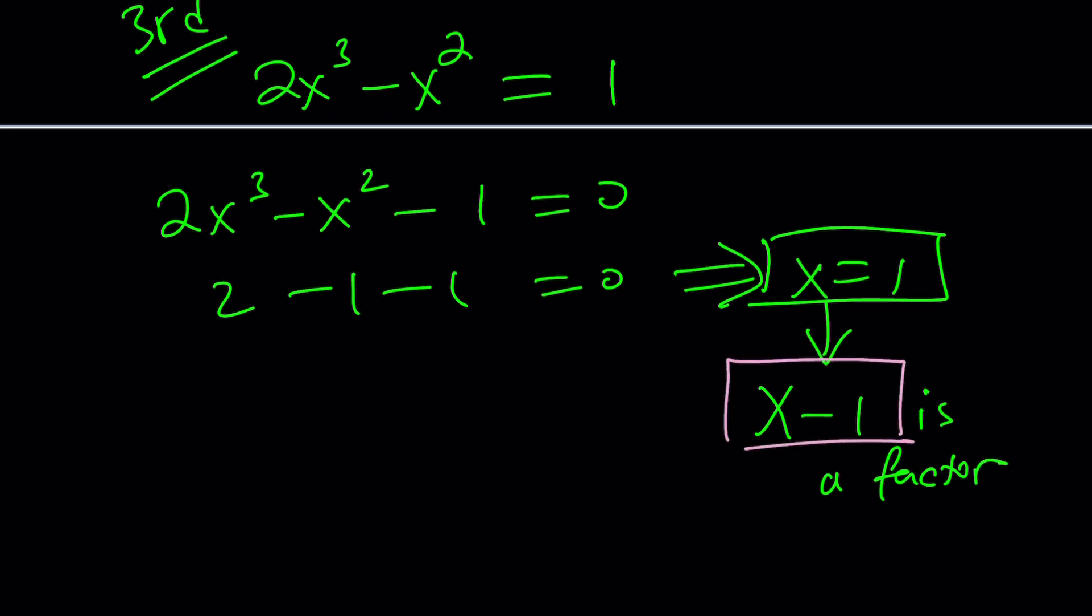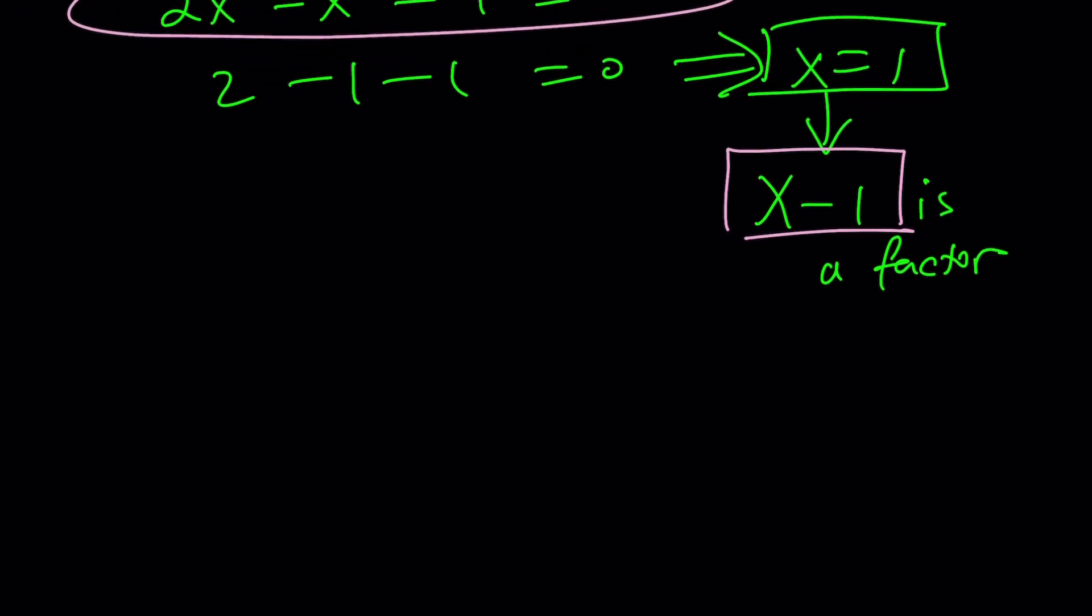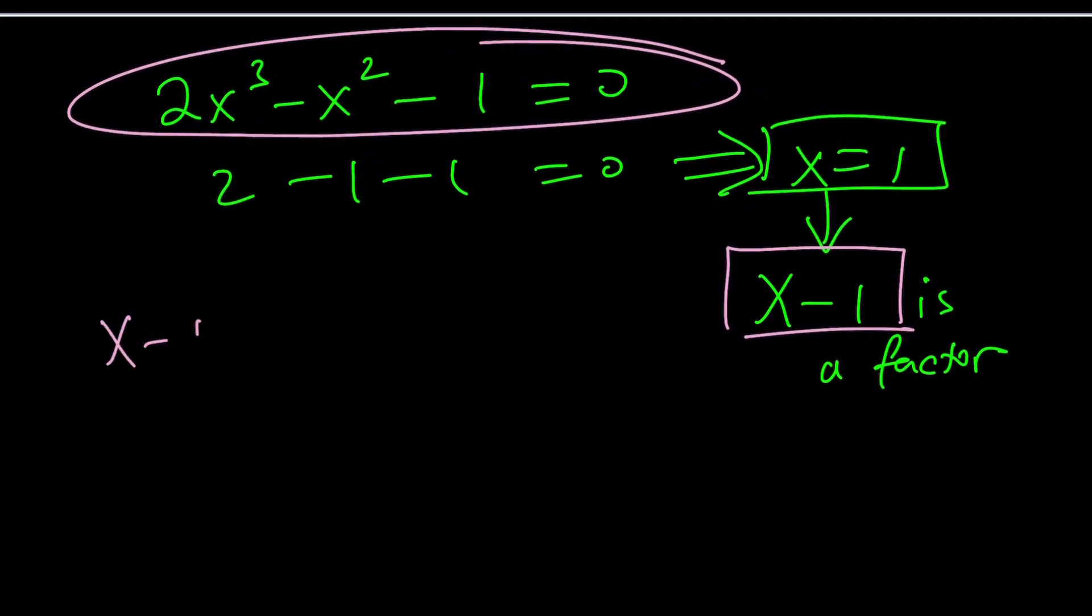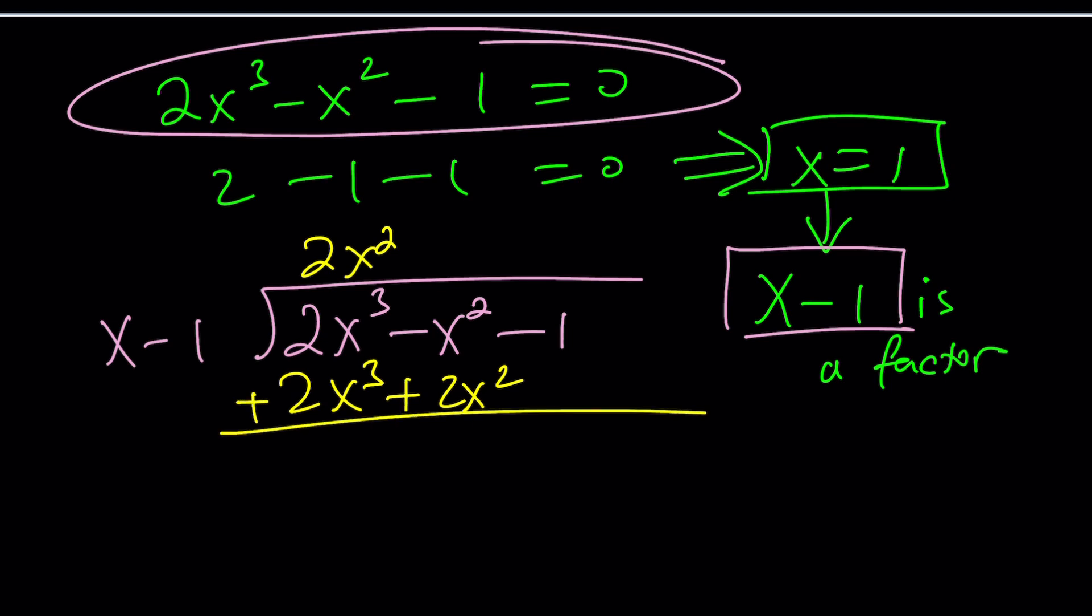So how does that help us? Well, knowing that x minus 1 is a factor, you can definitely divide this polynomial by x minus 1 with long division, if you like that. I don't like it, but it's not too bad. Let's do it for fun. Now, x goes into 2x cubed 2x squared times, then it's 2x cubed minus 2x squared. You must negate and add, which means subtraction.